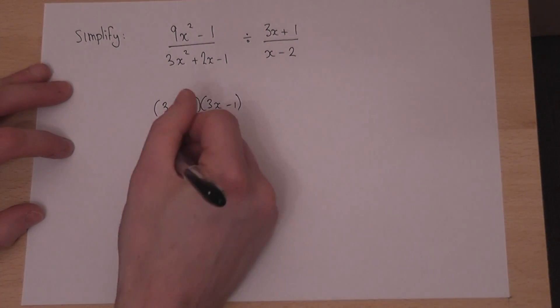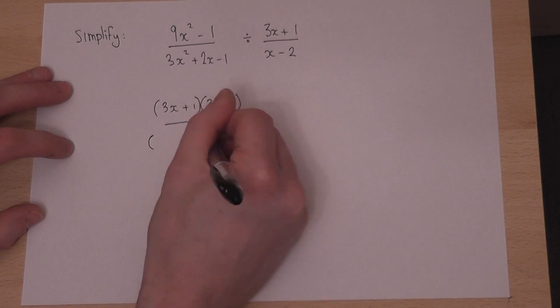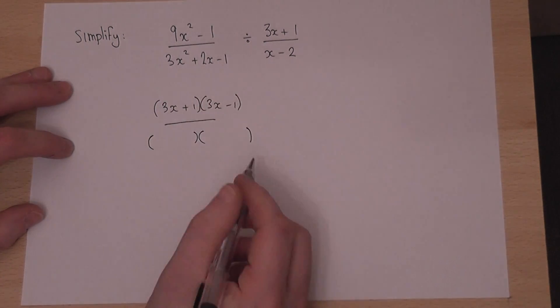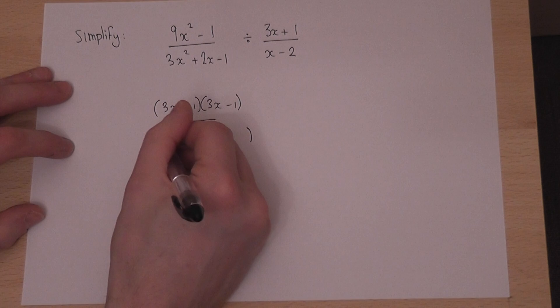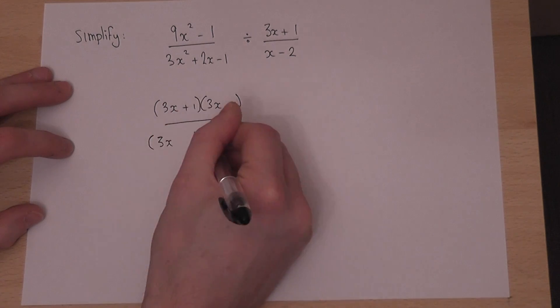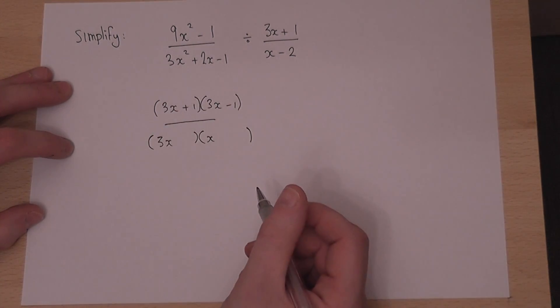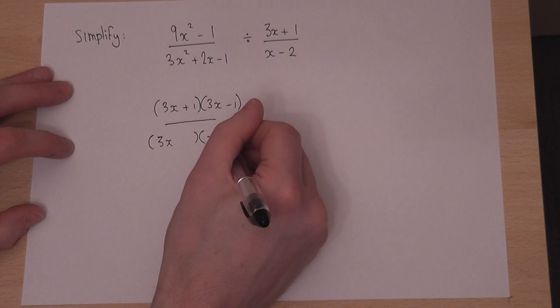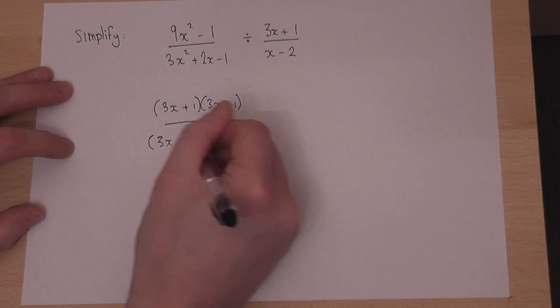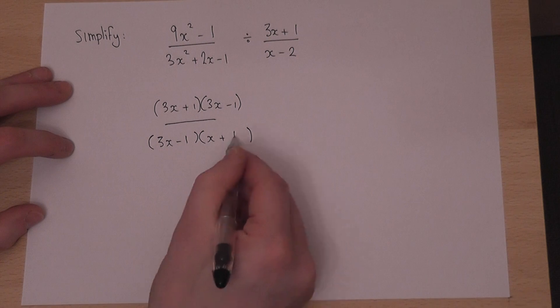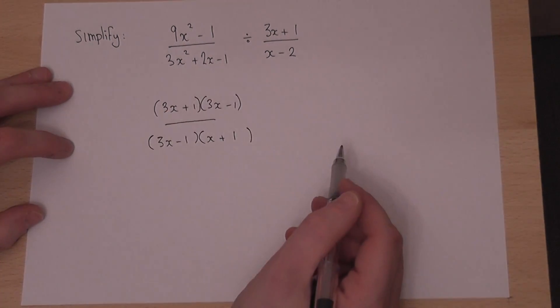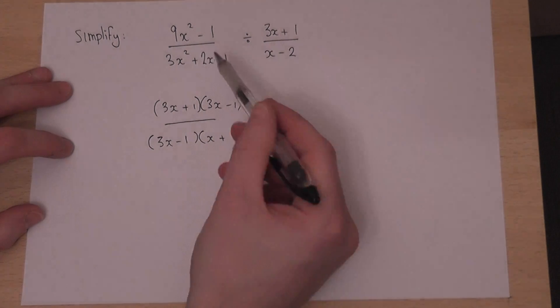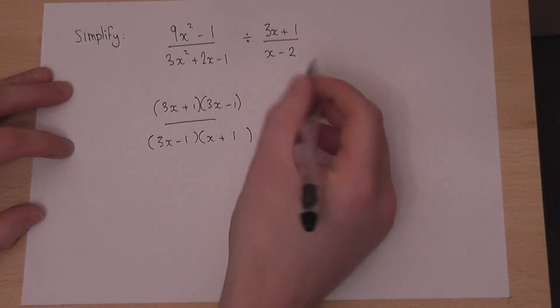Now the bottom will also be a double bracket. To get 3x squared requires a 3x and an x. But to get a minus 1 requires a 1 and a minus 1. Now to get a 2x, if I put the plus 1 here and the minus 1 here, then I get a 3x, take away an x, is a 2x. So the top and bottom have been factorised.